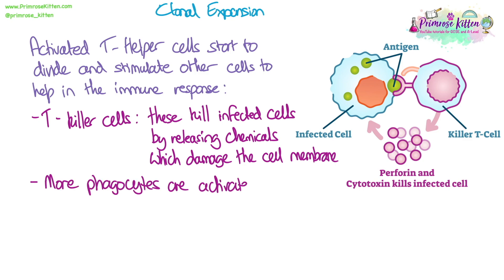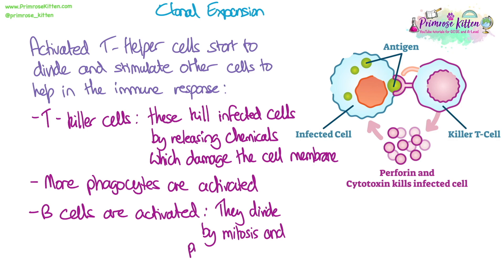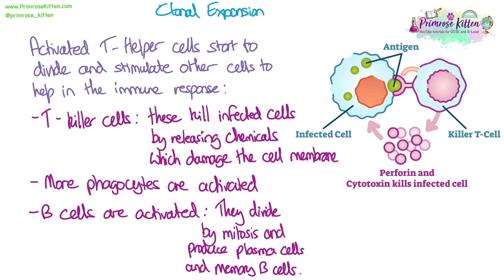More phagocytes are activated and stimulated to divide, so there will be more phagocytes roaming in the blood and tissue fluid. B cells are also activated and divide by mitosis, then differentiate into plasma cells, which produce antibodies, and memory cells.